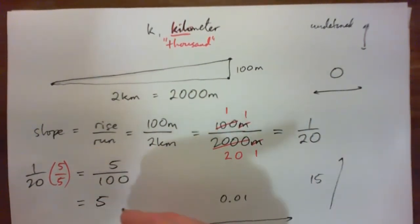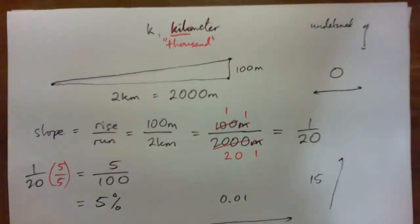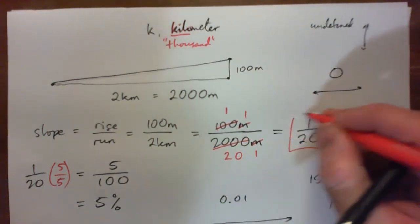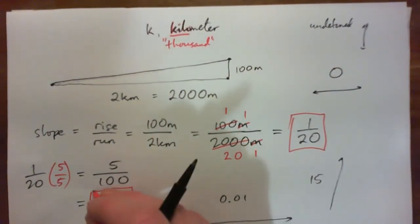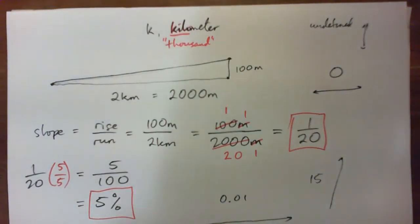Which is, in fact, 5 per 100, or 5 percent. That's what percent means, 5 per 100, 5 percent. So this is the simplified fraction form of the slope, and this is the percent of the slope. It's a 5 percent grade on that road, also called a grade. The slope is also called a grade with roads and other things.